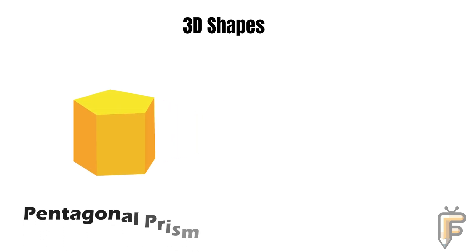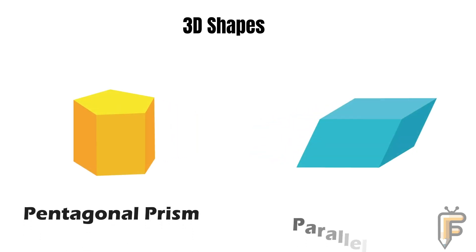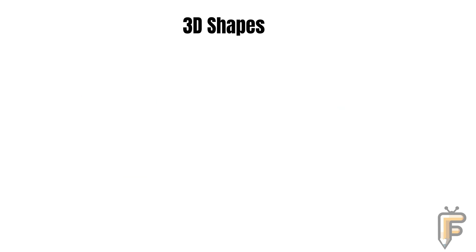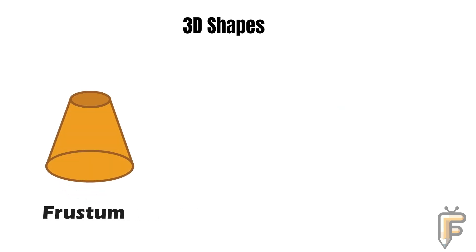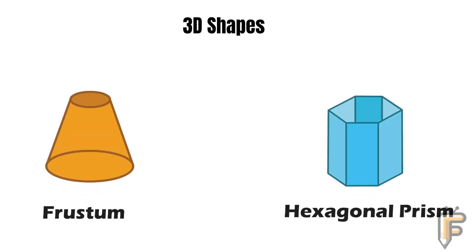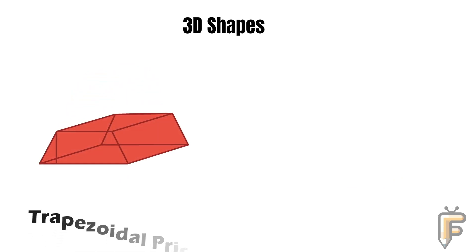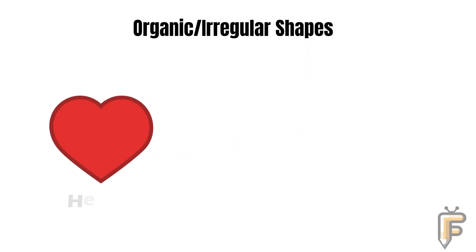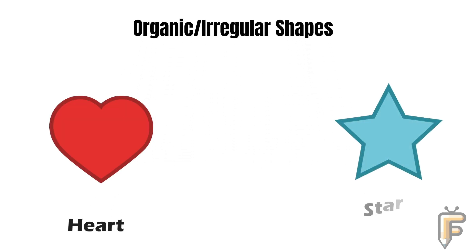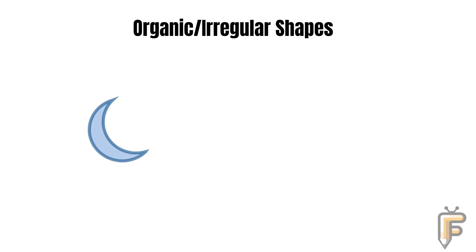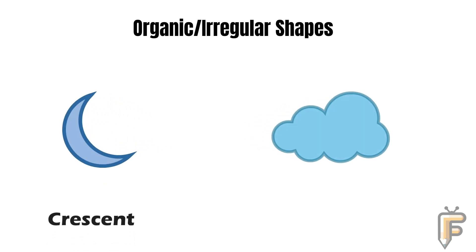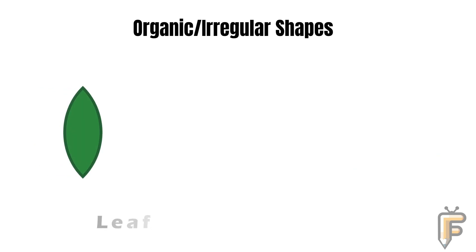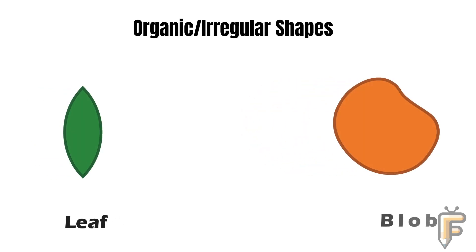Pentagonal prism, parallelepiped, frustum, hexagonal prism, trapezoidal prism, rectangular prism. Organic and irregular shapes: heart, star, crescent, cloud, leaf, bulb.